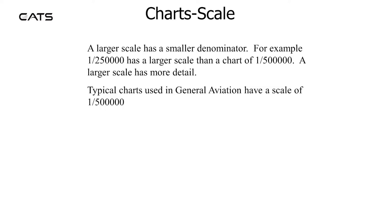A larger scale has a smaller denominator. For example, a 1 in quarter million chart has a larger scale than a chart of 1 in half a million. A larger scale has more detail. Typical charts in general aviation have a scale of 1 in half a million.